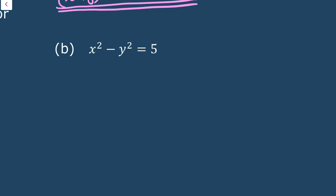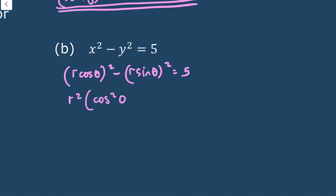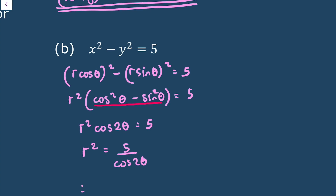For x squared minus y squared equals 5, substituting gives (r cos theta)^2 minus (r sin theta)^2 equals 5. Factoring out r squared: r squared(cos squared theta minus sin squared theta) equals 5. Recognising the double angle identity, this is r squared cos 2 theta equals 5, so r squared equals 5 over cos 2 theta, which means r squared equals 5 sec 2 theta.